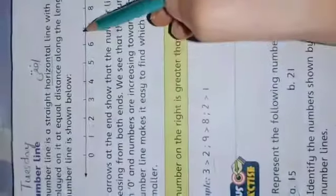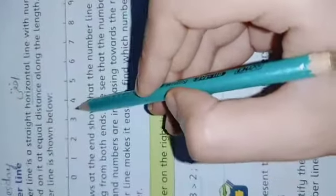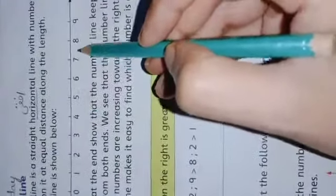The number line shown below is a horizontal straight line with numbers shown from 0 to 9: 0, 1, 2, 3, 4, 5, 6, 7, 8, 9.